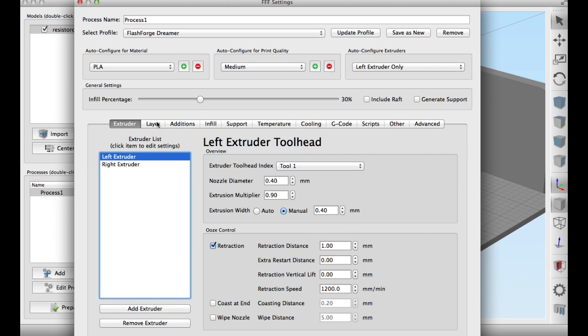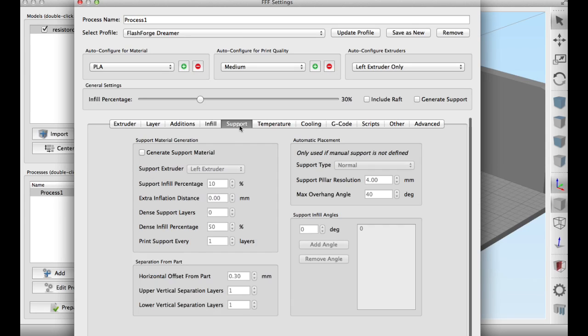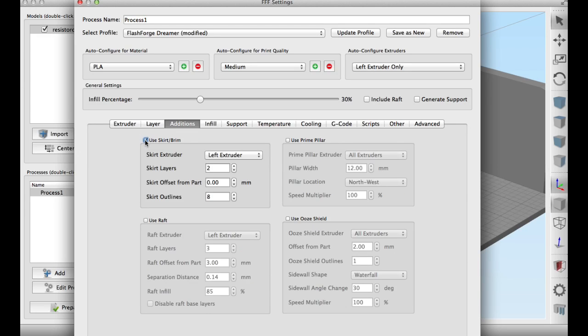And I did this all on my Flashforge Dreamer which just prints outstanding. So I did a 0.3 layer height which turned out really good and then for infill I did a 30% and then I didn't do any supports. Those blocks underneath I said to heck with it just let it sag but it really didn't. It did a good job. I did put a skirt and brim around it because I didn't want the bottom to warp.